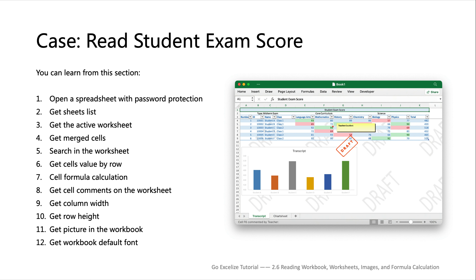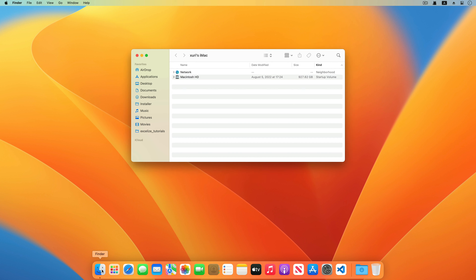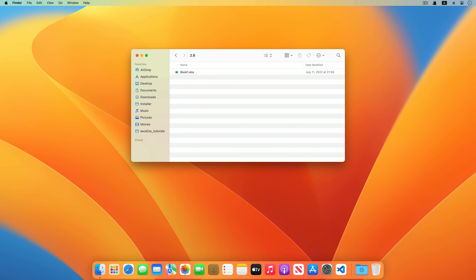You will learn 12 Excelize functions by this example. First I will show you how to open the encrypted workbook with the password, how to get all worksheet names in the workbook, and get the default worksheet index. Create a directory named 2.6 in the tutorial directory and put the student exam score workbook in this directory.